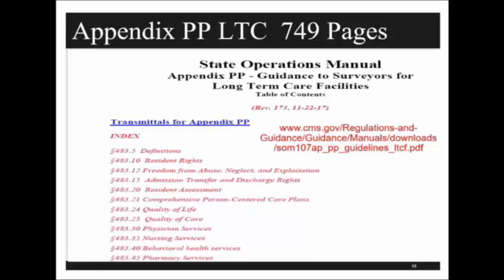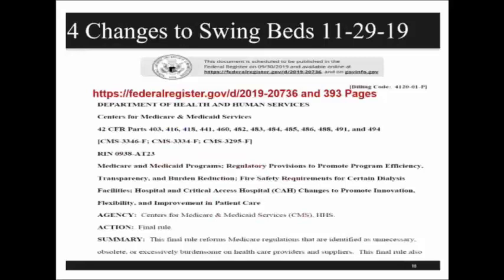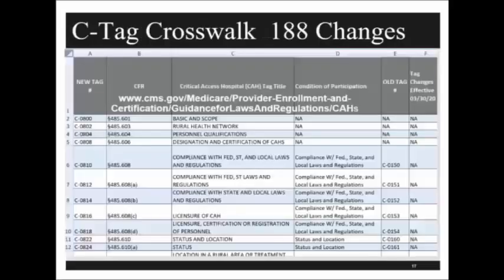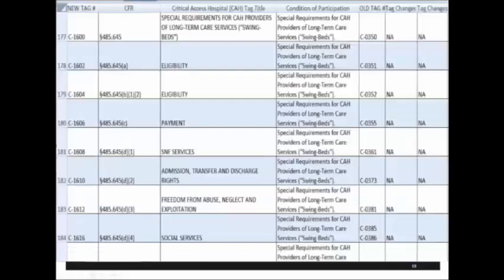Here is the transmittal you'll see when you go in — double-clicking on the posting date will take you to the most current version. There is also a tag crosswalk, because it can be confusing to determine which tag number to look at in Appendix PP or Appendix W. Tag number 485 applies to critical access hospitals, with the old tag number on one side and the new tag number on the other. The tag numbers we'll be discussing are in the 1600s.